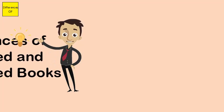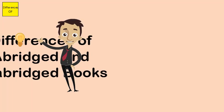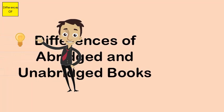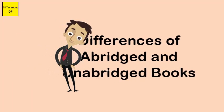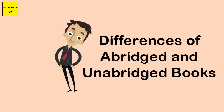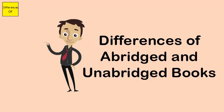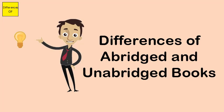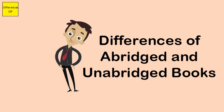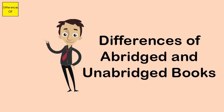Difference between abridged and unabridged books. Abridged books have simpler, shorter content, while unabridged books are more complete and longer in content. Abridged books are best for students.